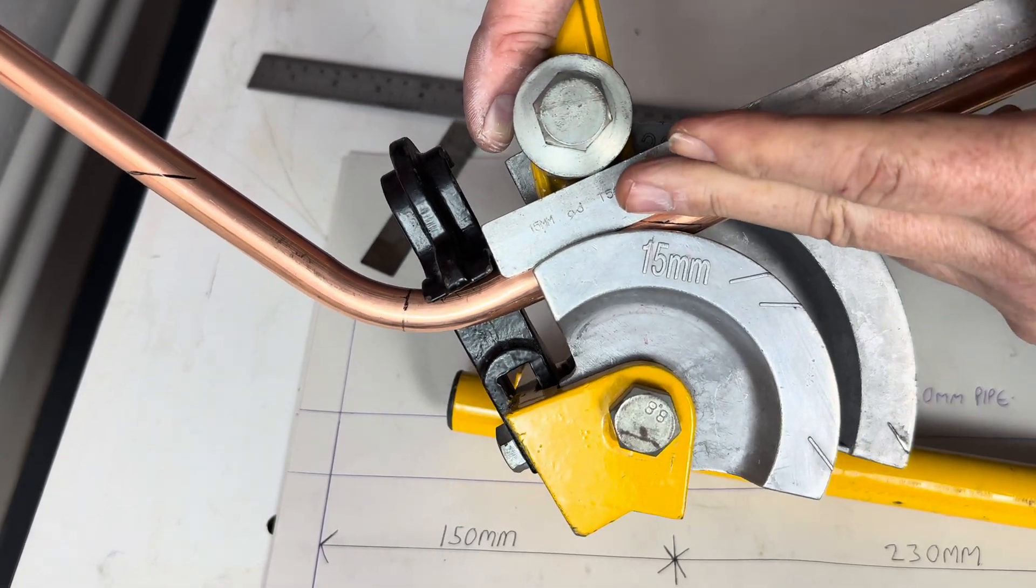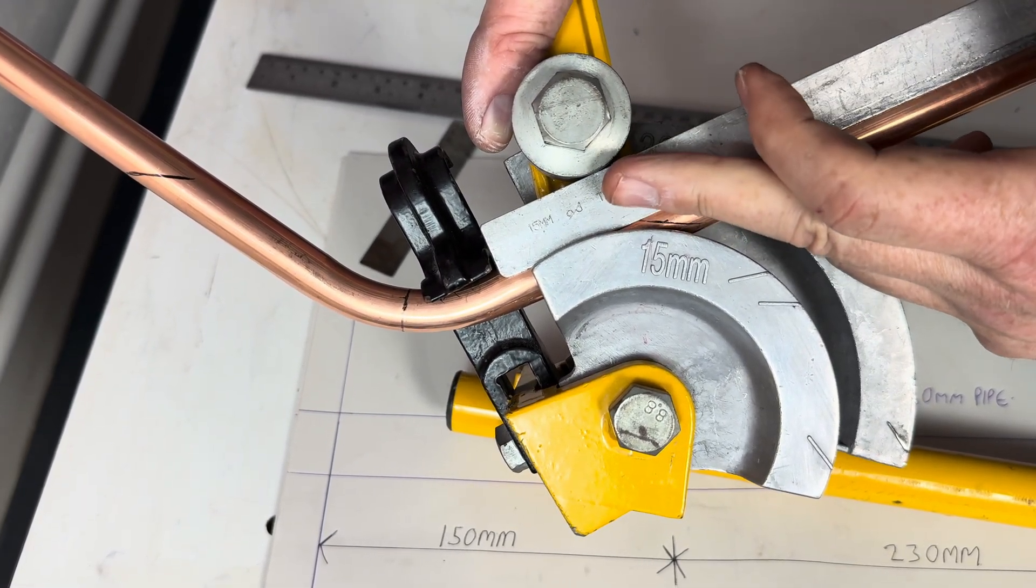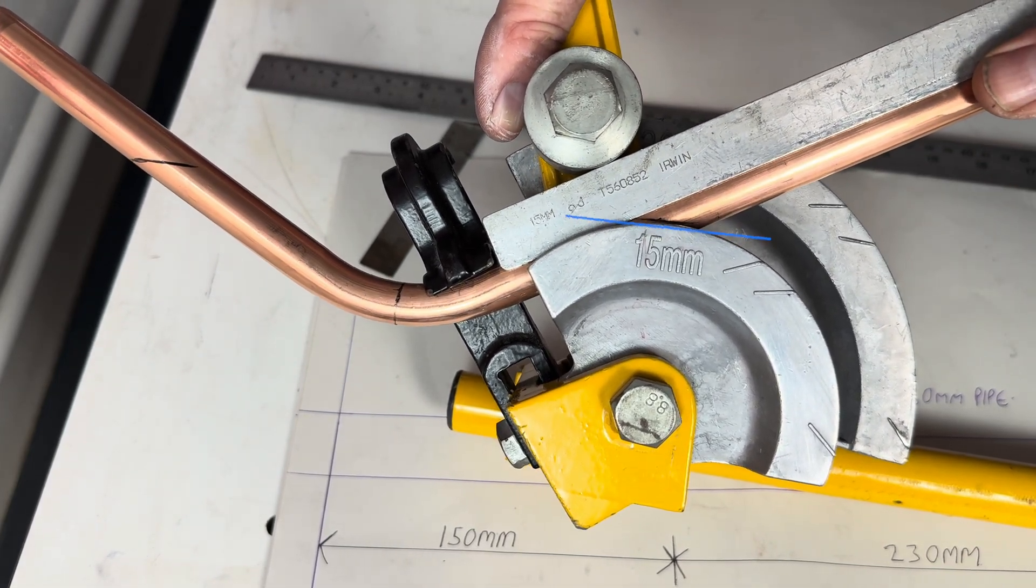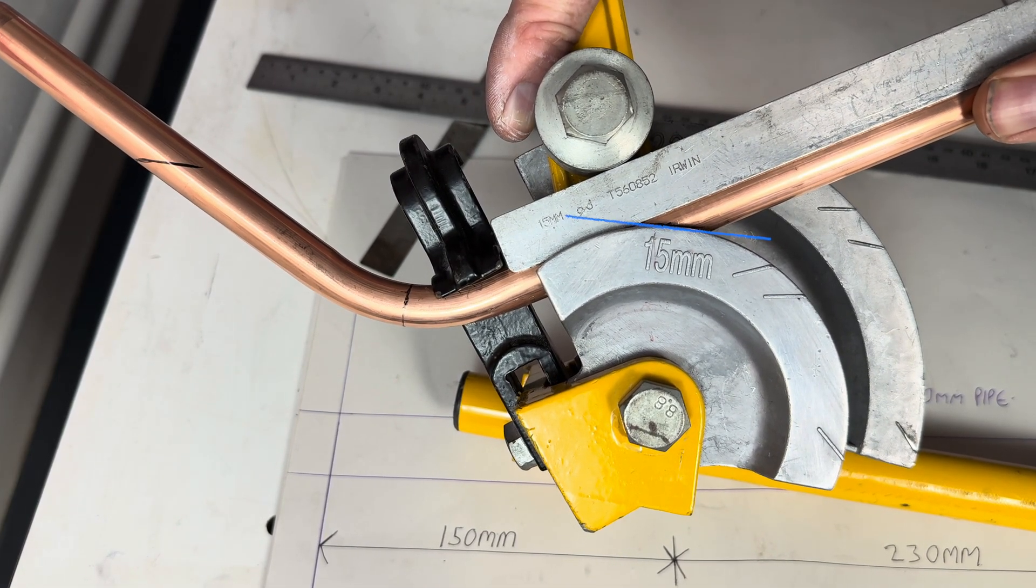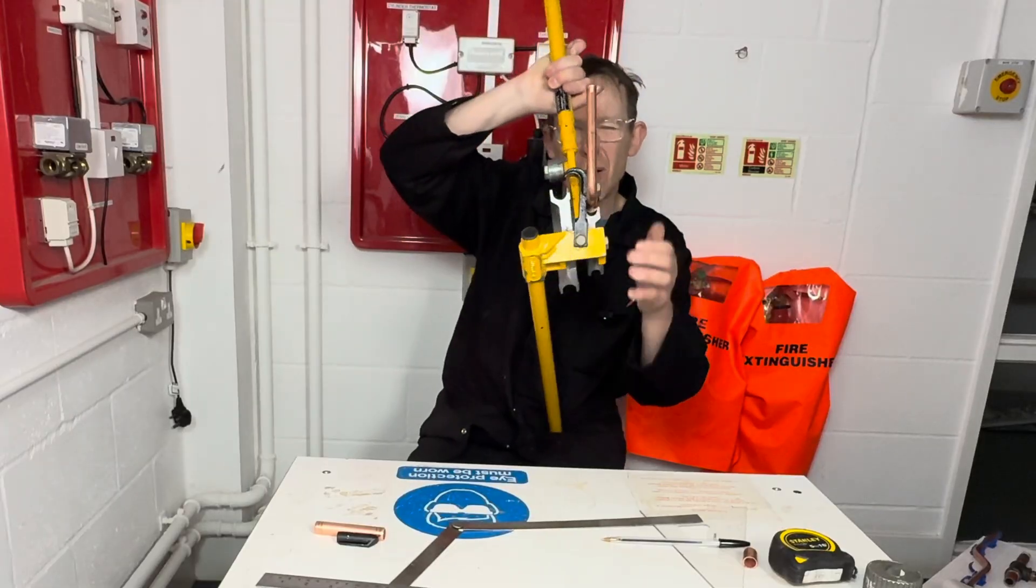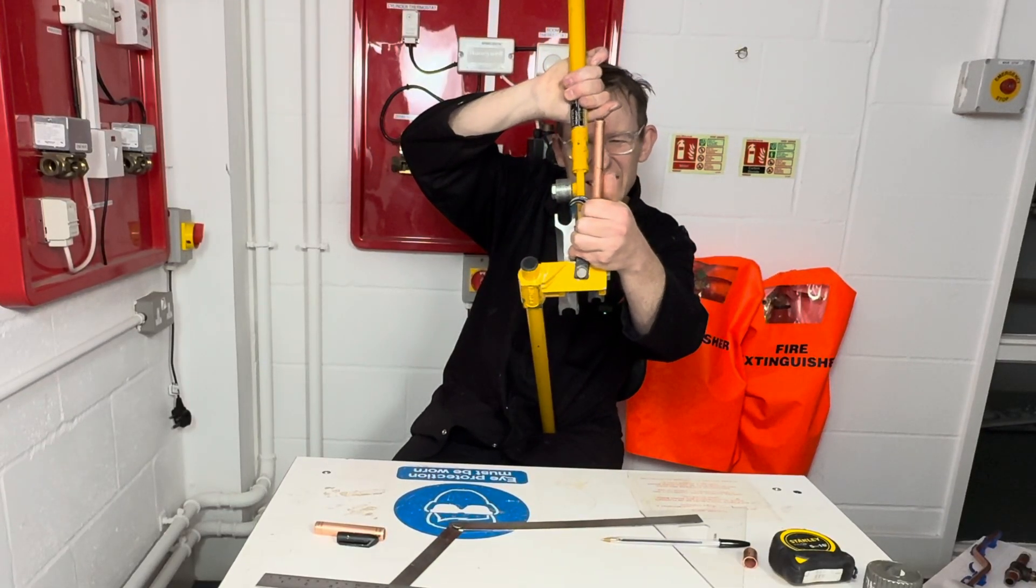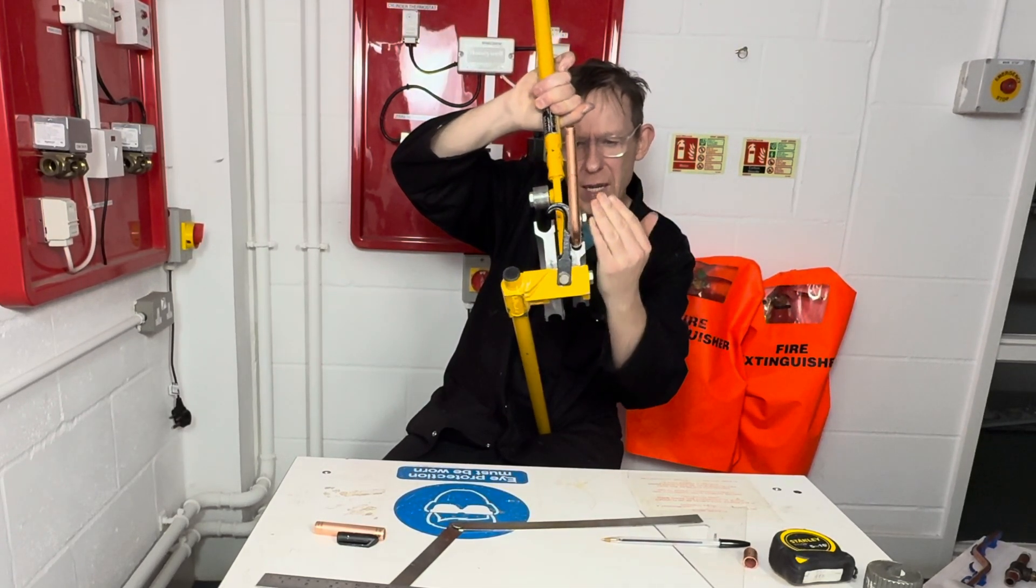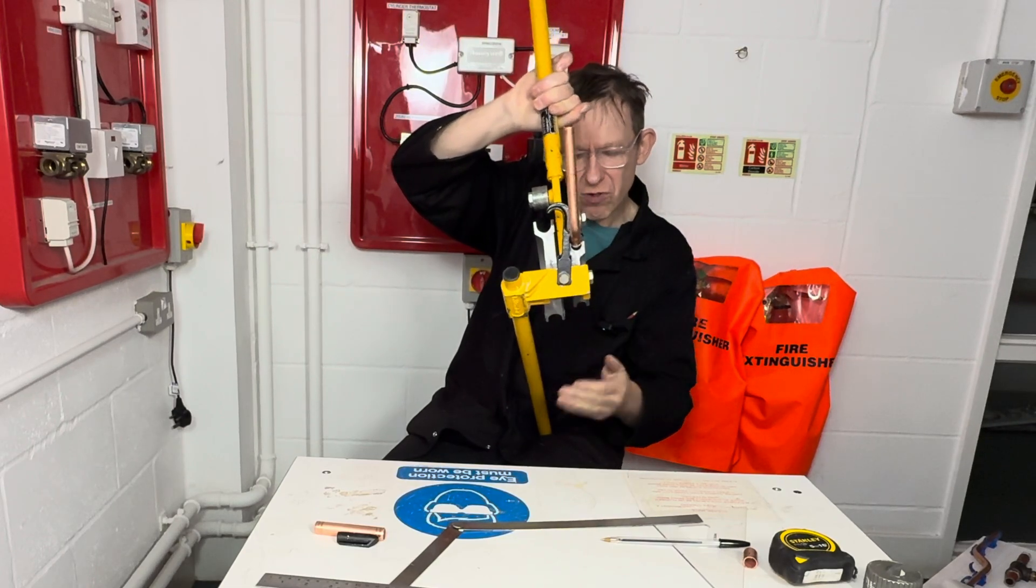So that line has just got to touch the former, just touching the former there. Make sure that the pipe is nice and straight in line. We can then proceed to bend this 30 degrees.